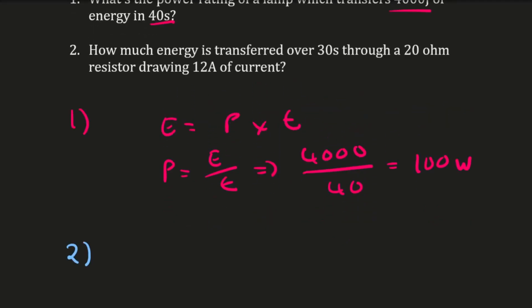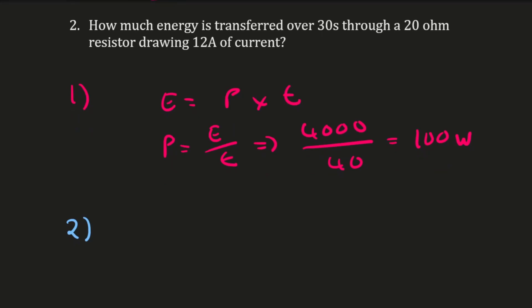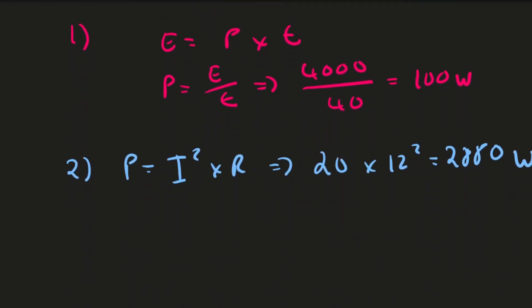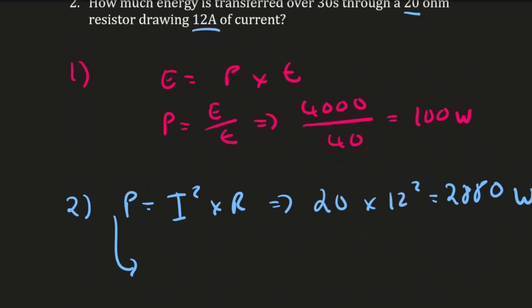Question 2: How much energy is transferred over 30 seconds through a 20-ohm resistor carrying 12 amps of current? First, work out the power using P = I²R. So: 20 × 12² — put that into your calculator — and you should get 2,880 watts.